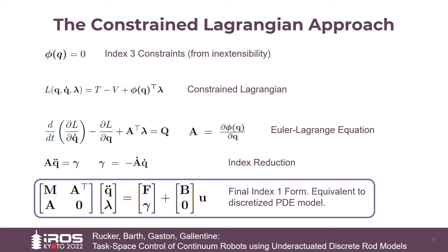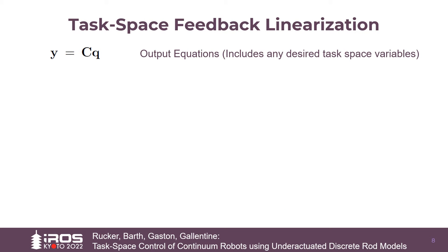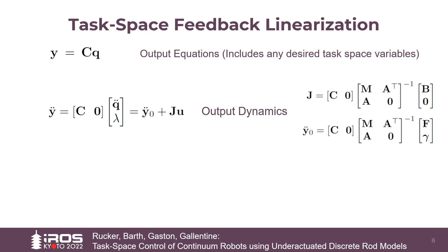However, the constrained Lagrangian approach has revealed the equations in a convenient matrix form. M is a diagonal matrix of inertial terms, and A is a sparse matrix describing the constraint structure. Coriolis forces are collected in gamma, and viscoelastic terms are present in F. U contains any actuation terms, and B is the typical selection matrix of 1s and 0s. This general model form conveniently facilitates task space control, because task space outputs are expressible as linear functions of the configuration variables. The model then directly produces the output dynamics with a small number of linear solves.